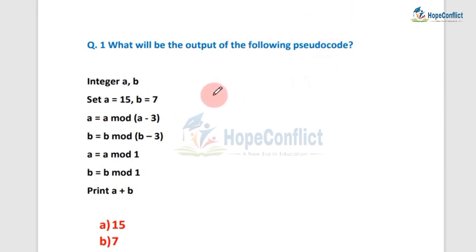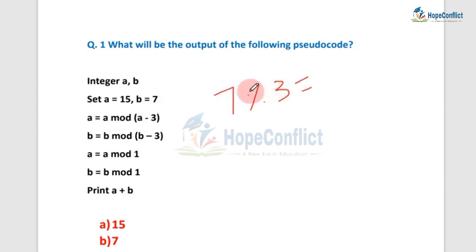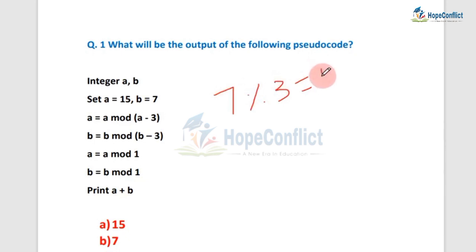The symbol for mod — we can also say percent. So 7 mod 3: what does it mean? 7 mod 3 means when we divide 7 by 3, what will be the remainder. Mod basically tells us the remainder when we divide. So the answer will be 1, because when we divide 7 by 3 the remainder is 1.